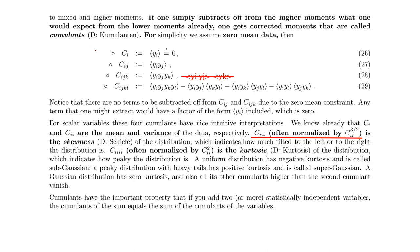The first cumulant is the mean, and the second is the variance. The third order auto-cumulant is called skewness, and the fourth order auto-cumulant is called kurtosis. These are often normalized so that they are independent of the scale of the variables — for example by dividing C_iiii by C_ii squared — but in this lecture they will not be normalized.